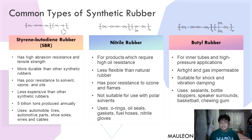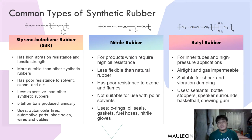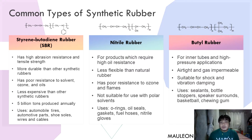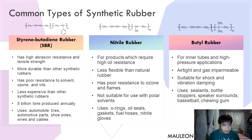Next is nitrile rubber, used for products which require high oil resistance. It is less flexible than natural rubber, has poor resistance to ozone and flames, and is not suitable for use with polar solvents. You will commonly see it on O-rings, oil seals, gaskets, fuel hoses, and especially nitrile gloves.